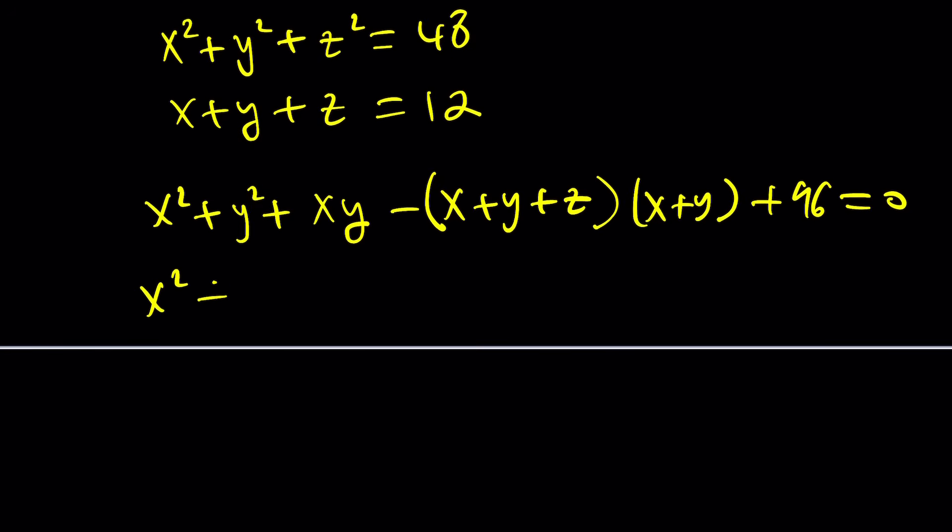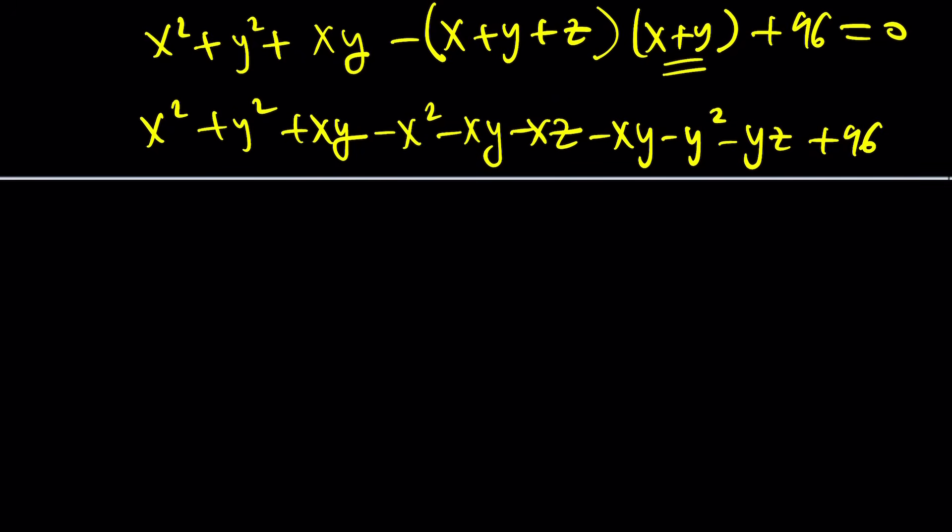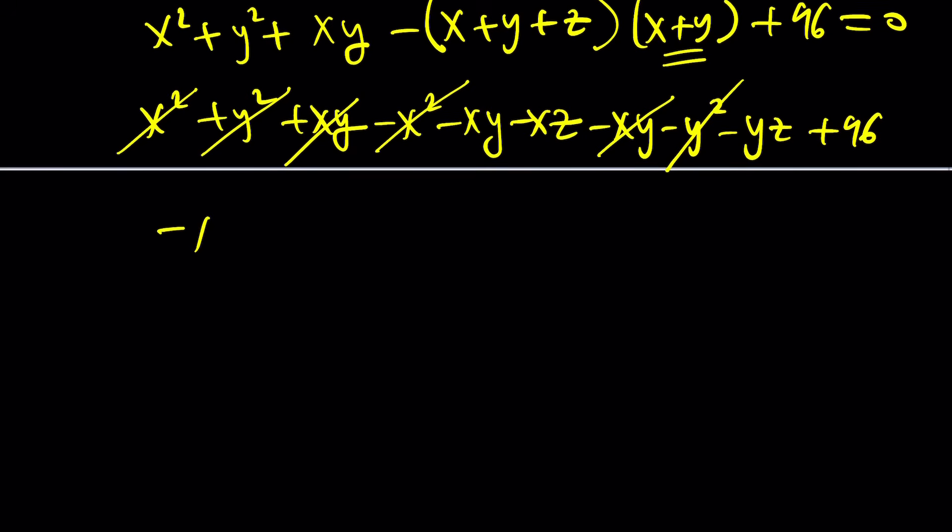Now, if you distribute, I'll probably start with x minus x squared minus xy minus xz. And then I'll do the y minus xy minus y squared minus yz. And then finally, plus 96. Here, you probably noticed something is going to cancel out, such as these two things. And then x squared cancels out. y squared cancels out. We end up with something weird.